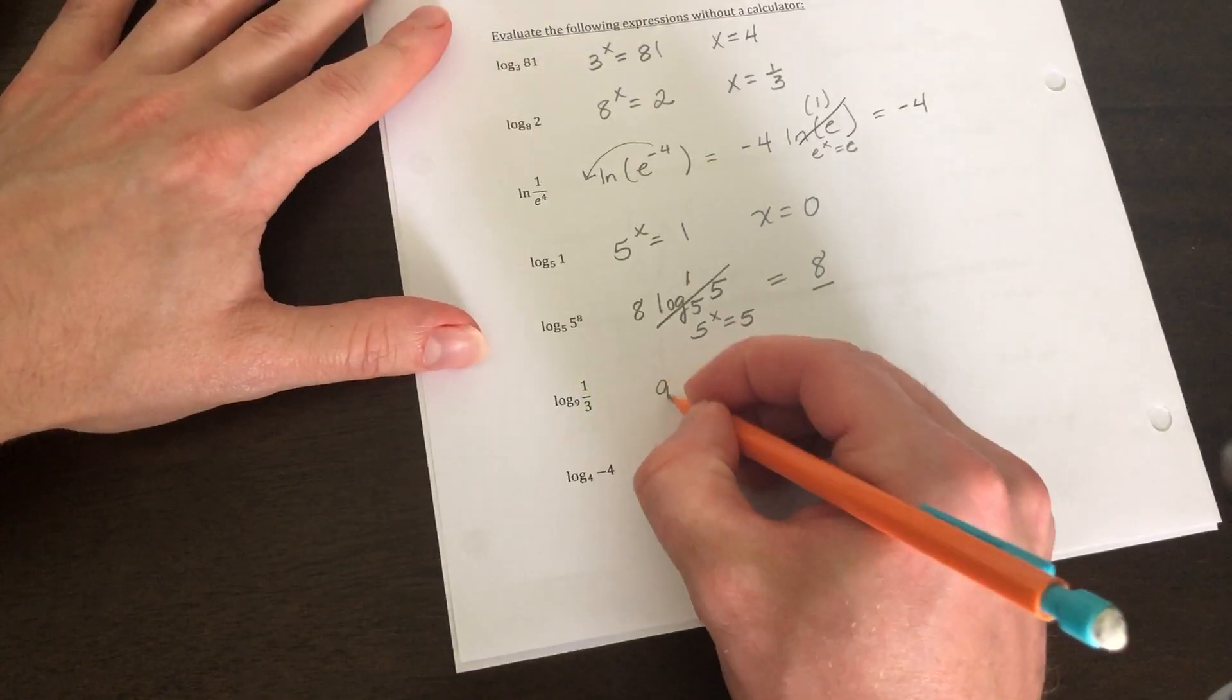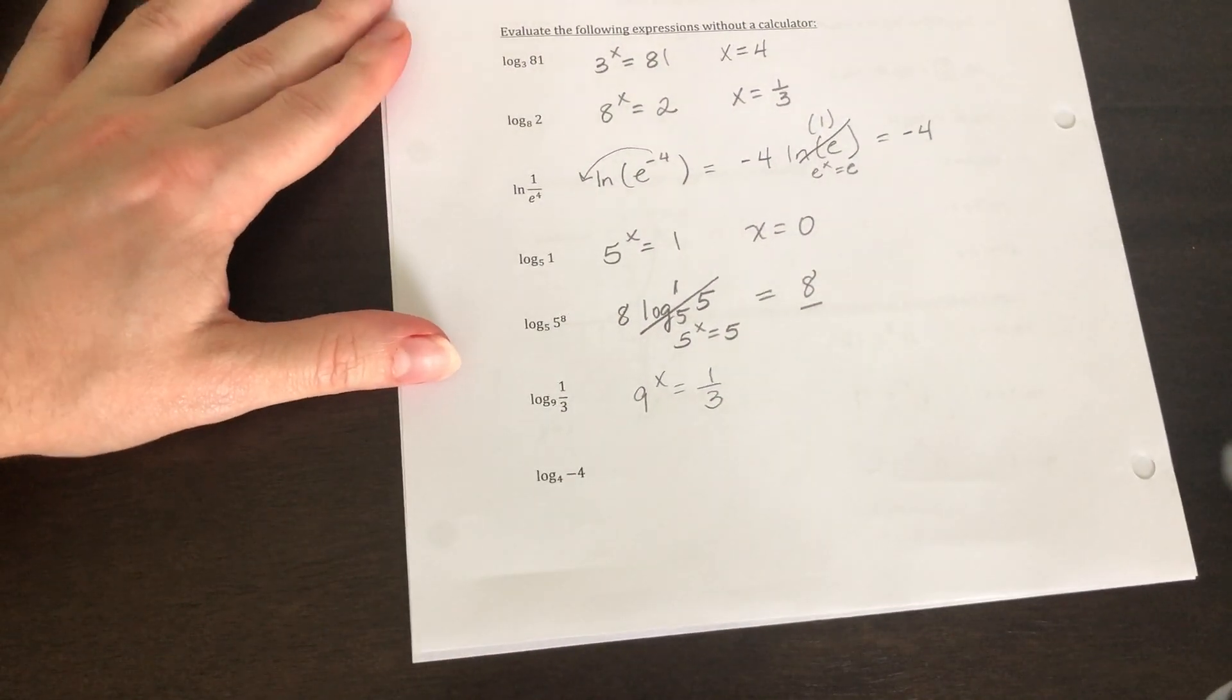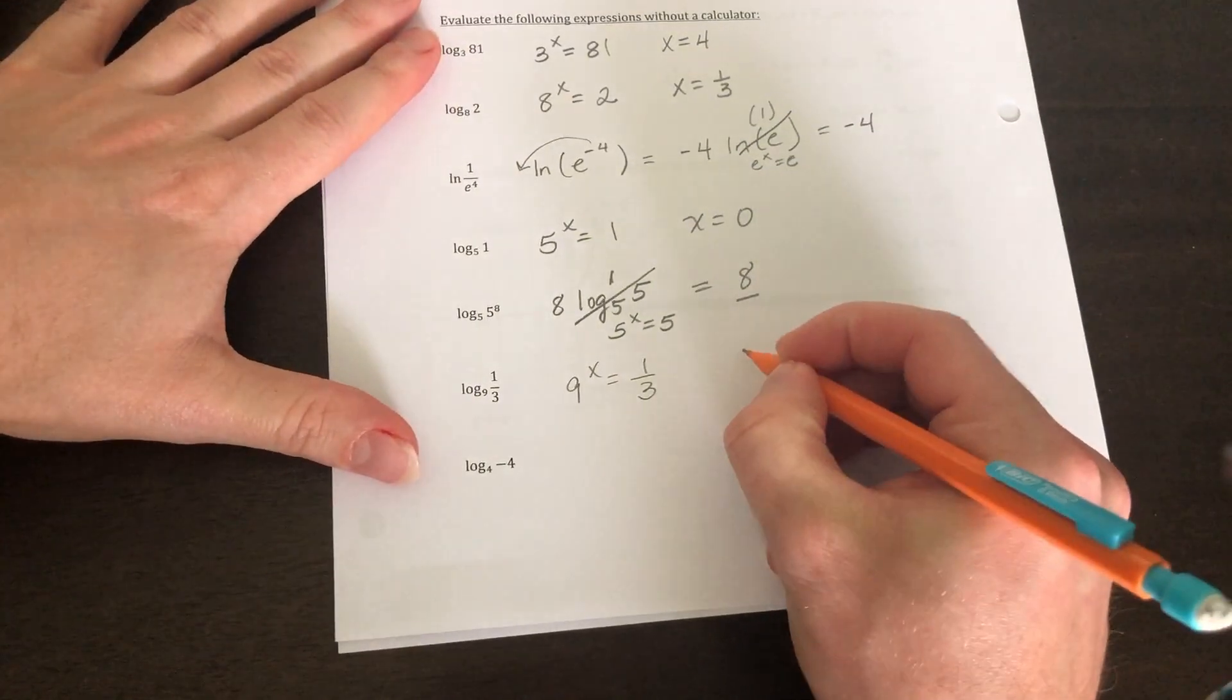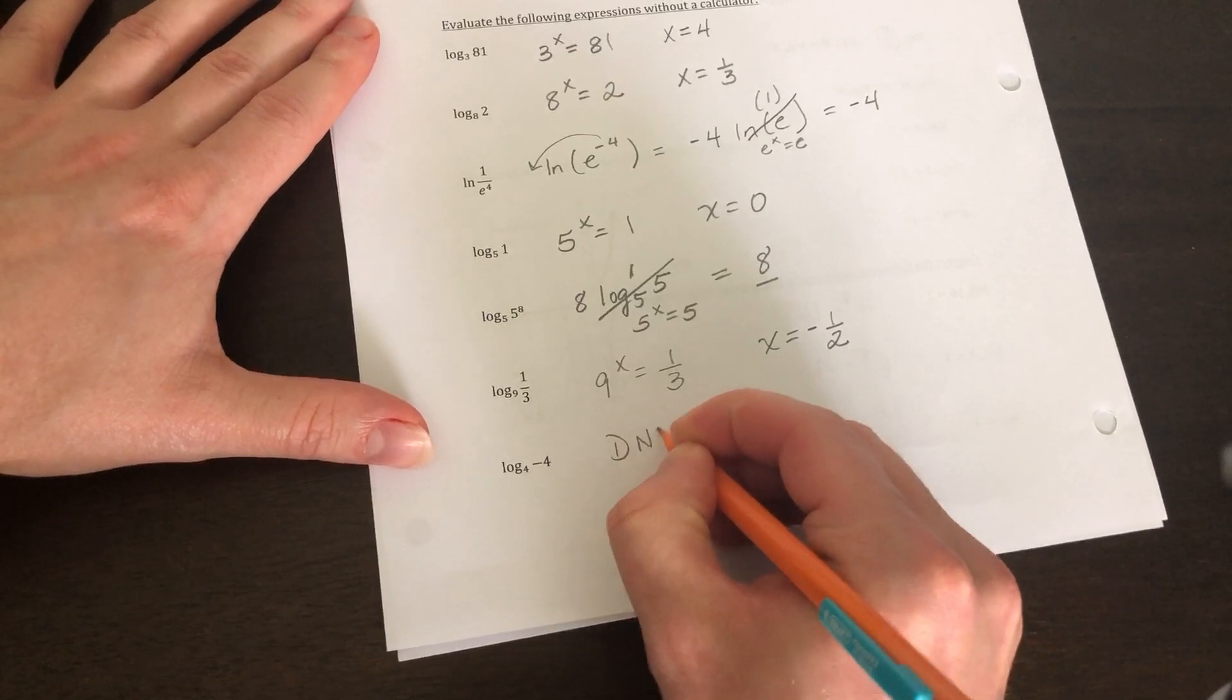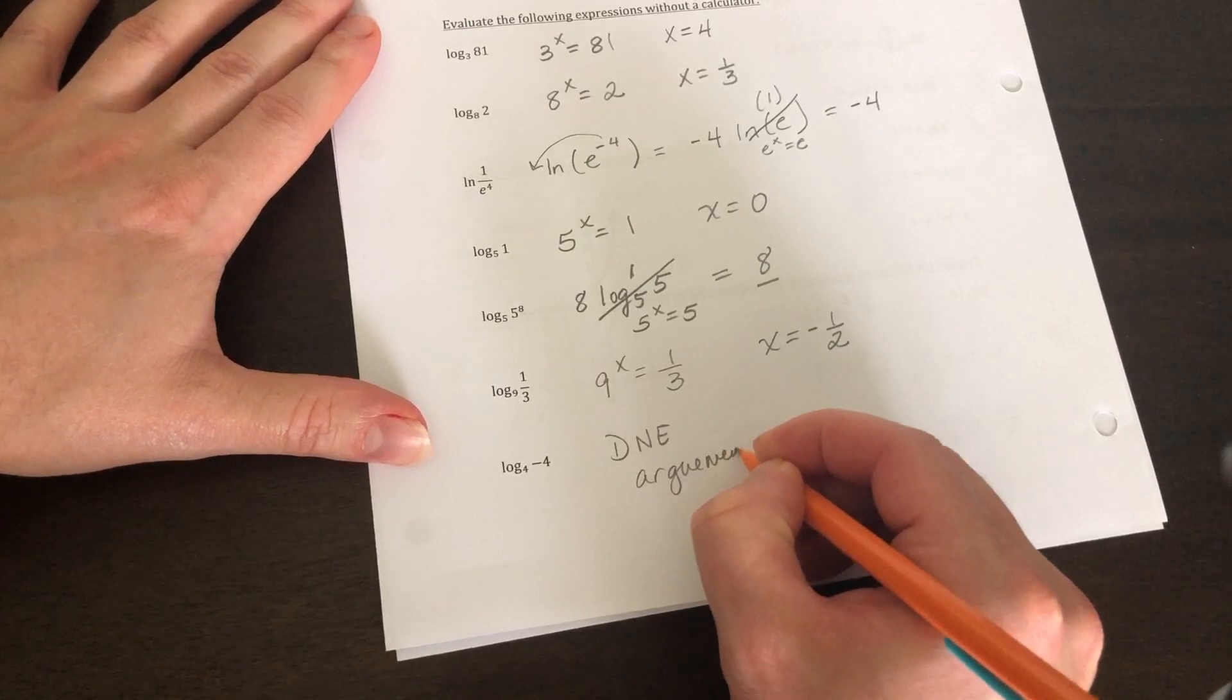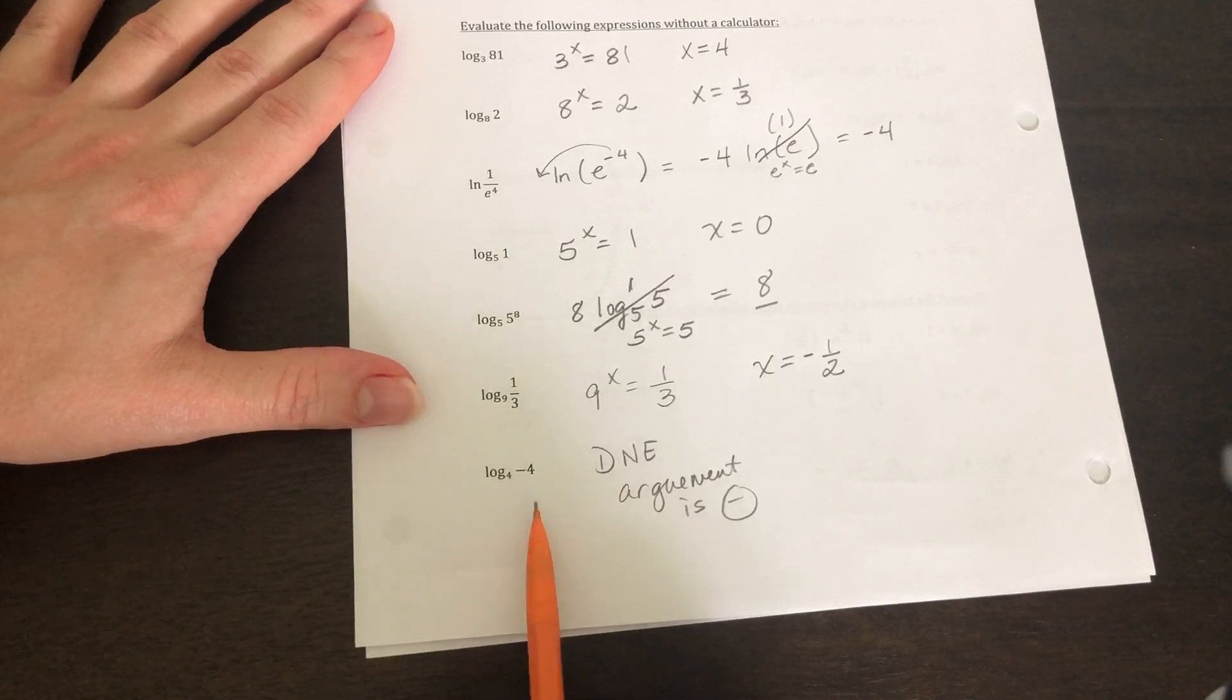We're going to say nine to what power gives us one third. Now when I'm doing these types of questions, I say, how do I go from nine to three, as far as like powers, raising stuff to powers. So the square root of nine is equal to three, I think we can all agree on that. Now since the three is on the bottom, it's going to be a negative exponent. Log four of negative four does not exist. Your argument is negative. Remember, we can't evaluate something that the argument is negative.